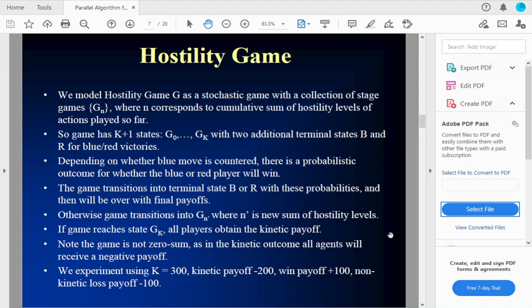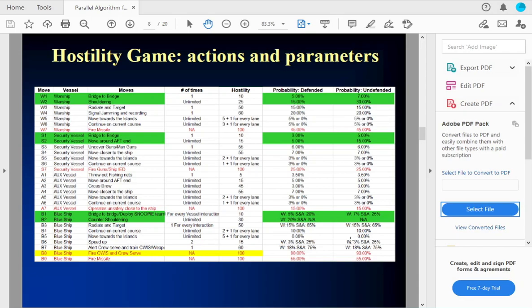And so if there's a win, say, win for blue and state GN, we're going to just transition to the state B and it's over. And if similarly a win for red, we're going to transition to state R and it's over. Otherwise, we're going to go to a new state GN prime, where N prime's now the new sum of the hostility levels of the actions taken by the players. And so if they keep doing this without a win and get up to GK, all the players are going to get this kinetic payoff, which is going to be a negative number. So in particular, this is not a zero sum game because in the kinetic mode, for example, all the agents are going to get this negative payoff. For our experiments, we're going to have K is 300 and the kinetic payoffs, negative 200. The normal win and loss payoffs are going to be plus and minus 100.